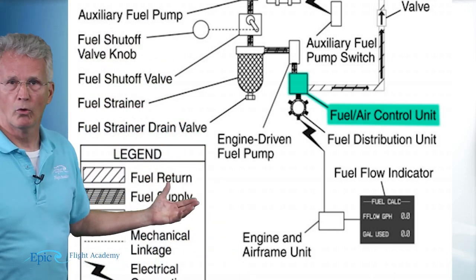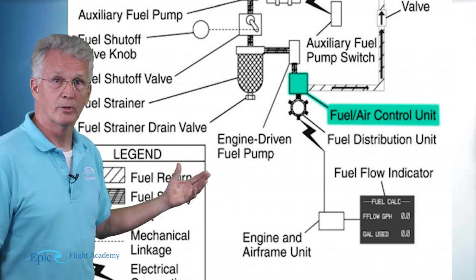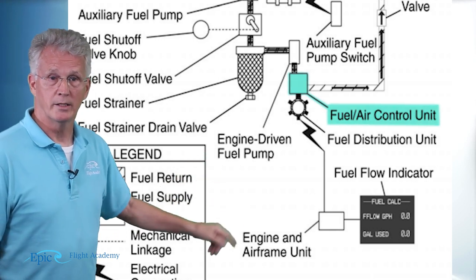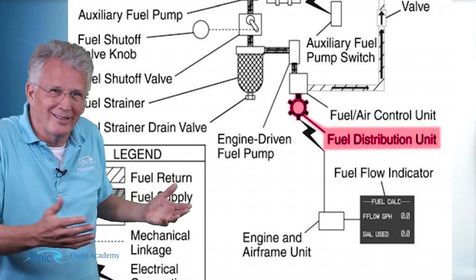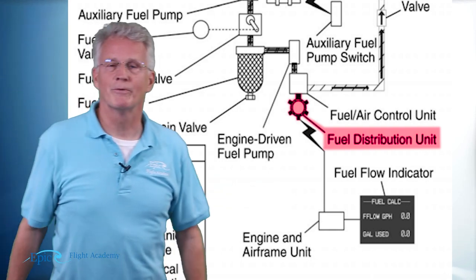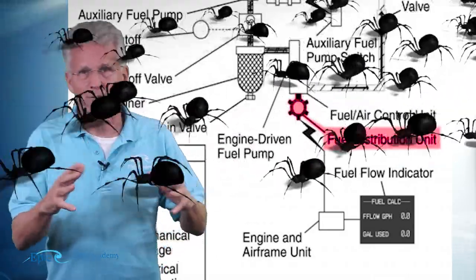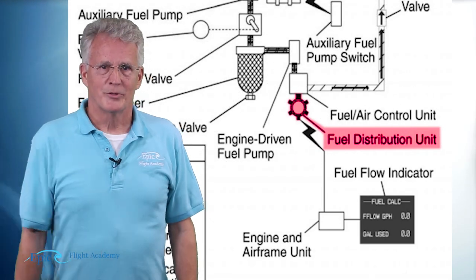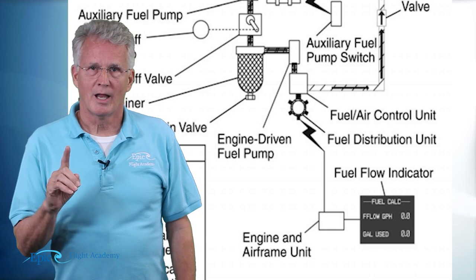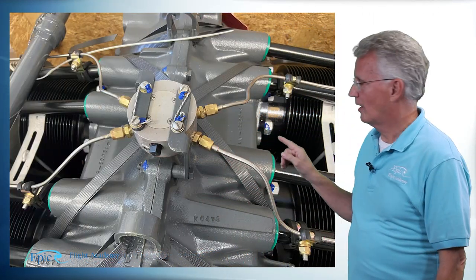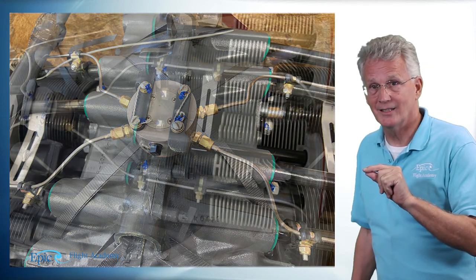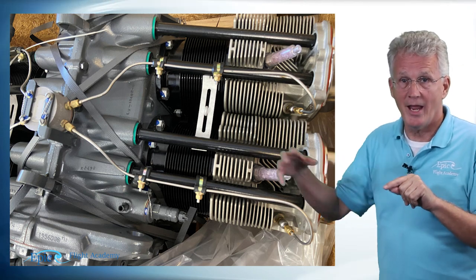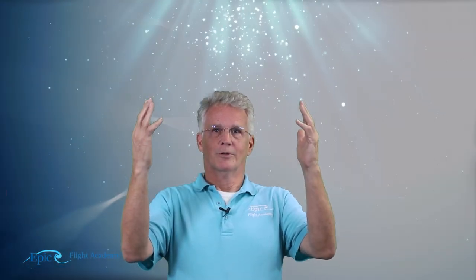Once the fuel air control unit determines how much air and how much fuel is needed, that fuel quantity is sent to the fuel distribution valve. If you take a look at it here, it might look like some kind of insect with legs sticking out of it — pilots sometimes refer to this as the spider valve. This spider valve has a line to each of the four cylinders, and the fuel is injected directly into the cylinder head alongside the air coming through the fuel injection valve. Hence the term fuel injection.